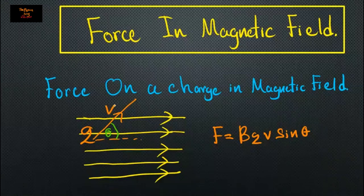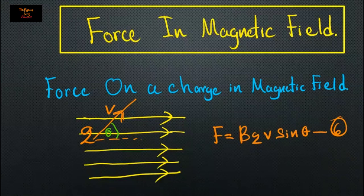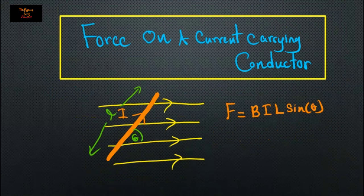Force applied on a charge moving with a velocity v: the force applied on the charge by the magnetic field is F equals B q v sine-theta, where v is the velocity and theta is the angle. This is the sixth equation.